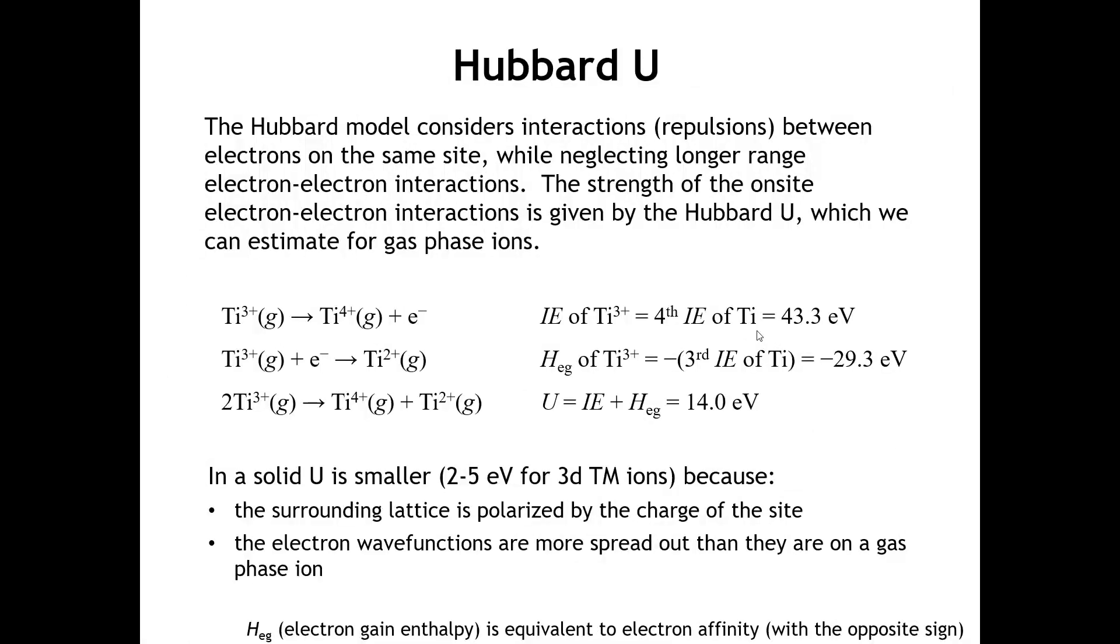How can we model these electron-electron repulsions? We're going to use something called a Hubbard model. In the Hubbard model, we only consider repulsions between electrons on the same site, neglecting longer-range electron-electron interactions. In a gas phase atom, we could determine the on-site repulsion from the ionization energies of the metal ions of interest.